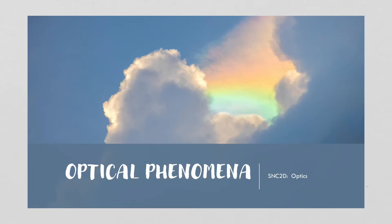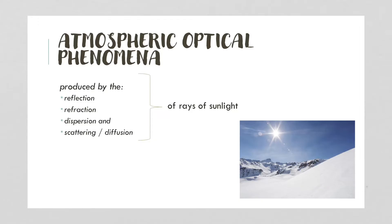In this video, we're going to learn about a variety of optical phenomena. Optical phenomena in the atmosphere are due to either the reflection, the refraction, or the dispersion, or the scattering and diffusion of rays of sunlight. Sometimes you'll see rainbows around the sun — all these phenomena that you might have wondered how they're happening. We're going to learn about that today.